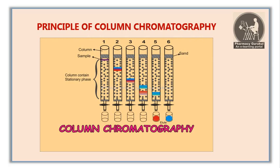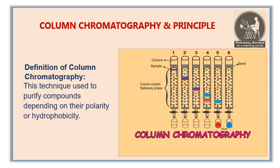The most important component of column chromatography is the column. It is a tube-like structure made up of glass or borosilicate glass. One thing to clarify: the figure shown in this video has about six columns, but that is actually one column showing different stages of the procedure.